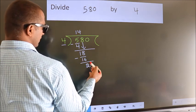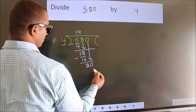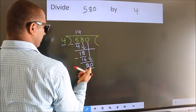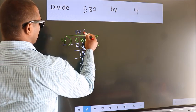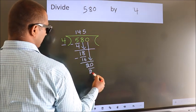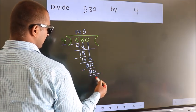After this, bring down the beside number. So 0 down, so 20. When do we get 20 in the 4 table? 4 fives 20. Now we subtract. We get 0.